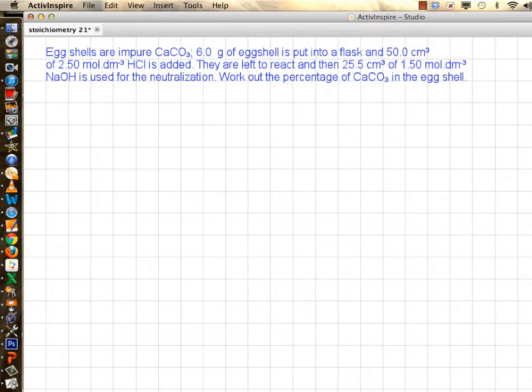In this tutorial I want to solve an example of back titration. We have eggshells which are impure calcium carbonate. In this example you have six grams of that. First thing we do is we crush the eggshell, put it in a flask.